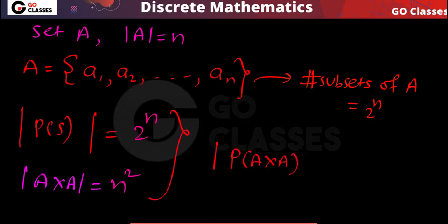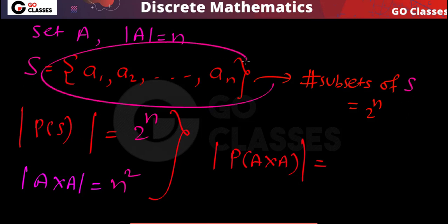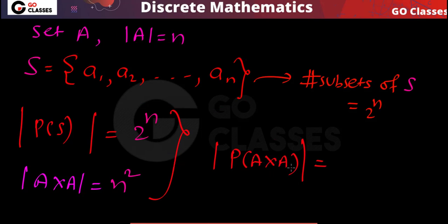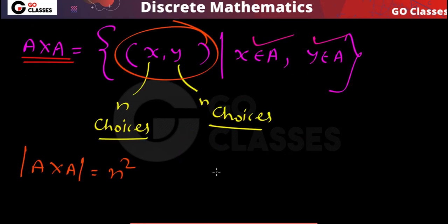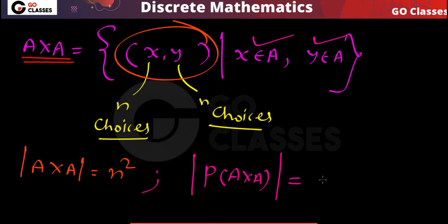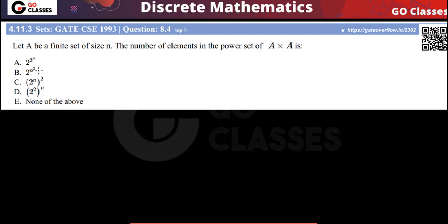Now the question asks for the cardinality of the power set of A×A. For any set S with n elements, the cardinality of its power set is 2^n. In A×A we have n² elements, so the power set of A×A will have 2^(n²) elements. Therefore the answer is 2^(n²). The cardinality of A×A is n², so the number of subsets of A×A equals the number of elements in the power set of A×A, which is 2^(n²). The answer is option B.